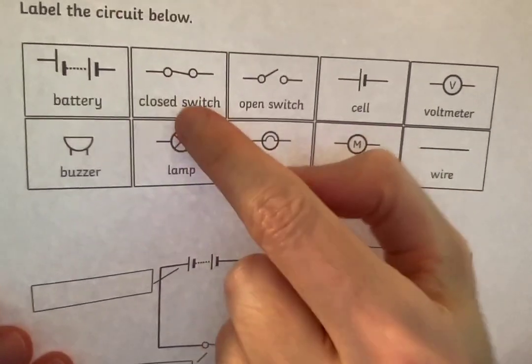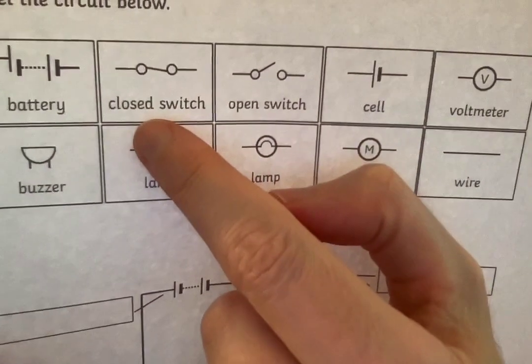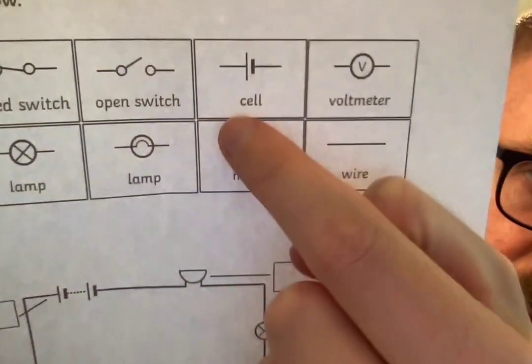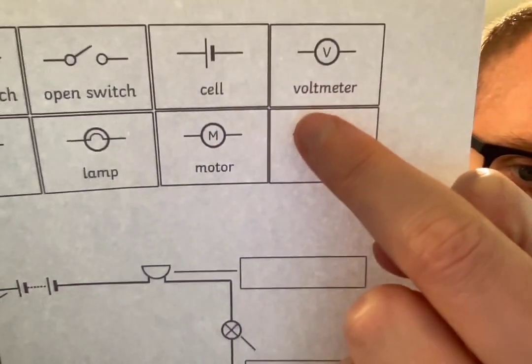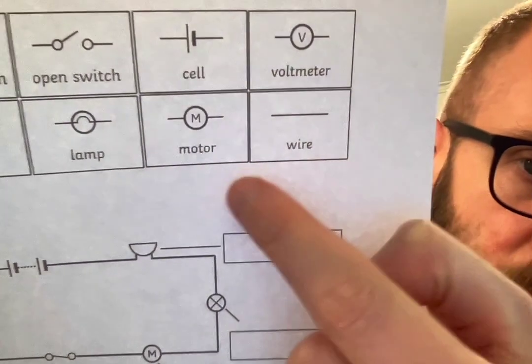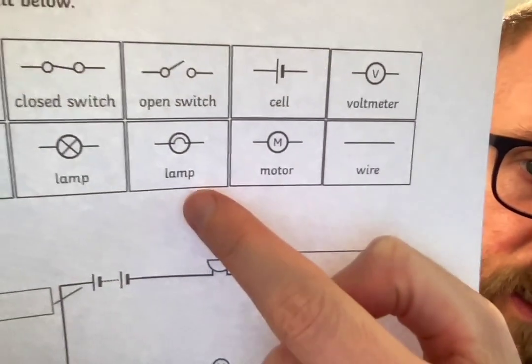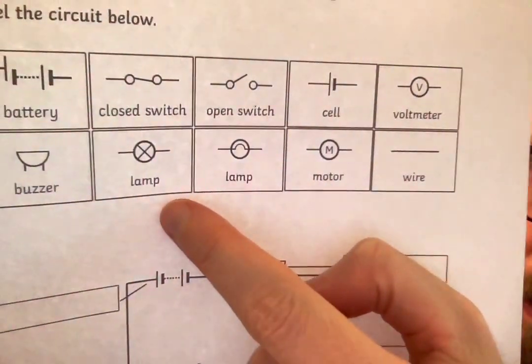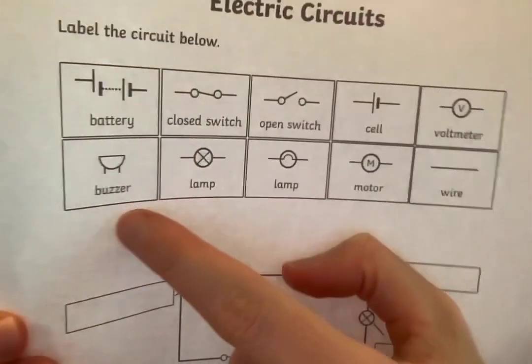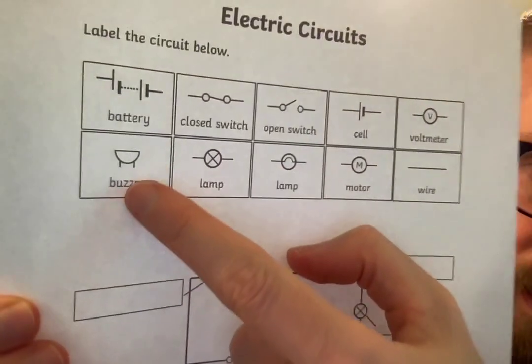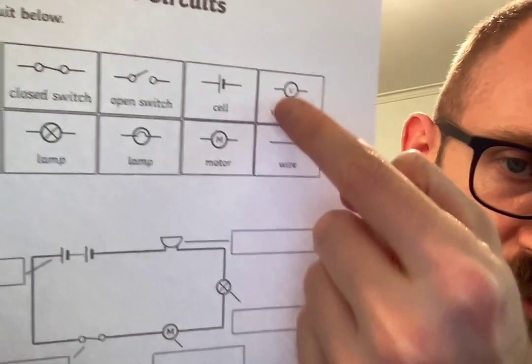A symbol for a closed switch, open switch, a cell, a voltmeter, a wire, a motor, a lamp, another kind of lamp, and a buzzer. So I want you to look at all these symbols that mean these things and then label this circuit.